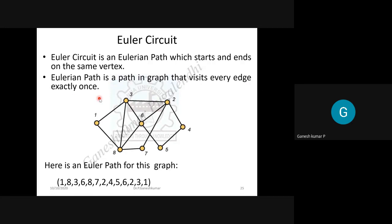This is a little contradictory compared to traversal operations. In traversal, the task is visiting nodes, but here the task is traveling on edges. Once you choose a path from one node to another, the same edge should not be used again. That is what Euler is talking about — every edge visited exactly once.